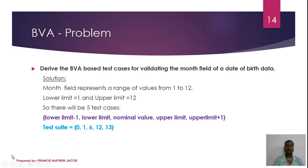So the lower limit is 1 and the upper limit is 12. If it is a range of values, there are 5 test cases: lower limit minus 1, lower limit, nominal value, upper limit, upper limit plus 1. So the test suite is: 0 (lower limit minus 1), then the minimum value 1, then the nominal value 6, then the upper limit value 12, and the upper limit plus 1 value 13. This is the test suite.